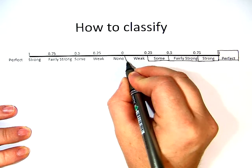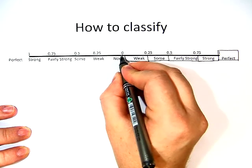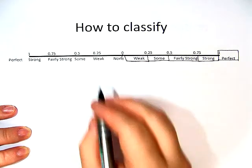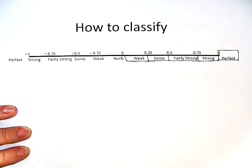And anything coming close to 0 to 0.25 is weak. Now, at 0 exactly, there is no linear relationship or none. And the same is true of the negative side. So if you can get one side down, then you can get them all.